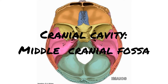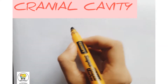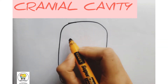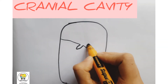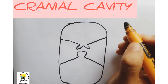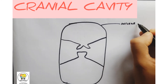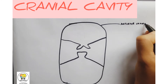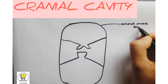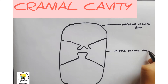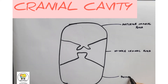Hello friends, we are here with another suggested topic from anatomy. Today we will help you to draw diagrams regarding the cranial cavity. Draw a shape to represent the skull, then using two lines divide it into three portions. The floor of the cranial cavity is divided into anterior cranial fossa, middle cranial fossa, and posterior cranial fossa.